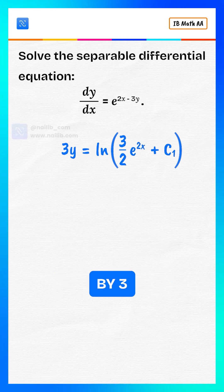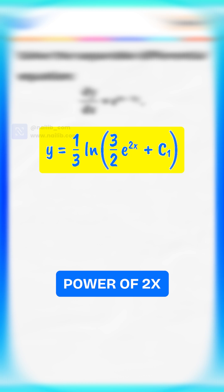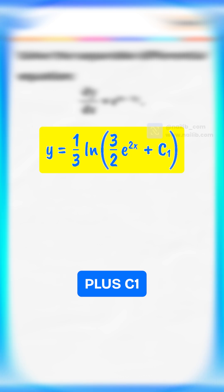Now, divide by 3 both sides. Hence, y equals 1 by 3 multiply by log of 3 by 2 e to the power of 2x plus c1.